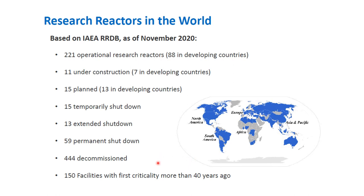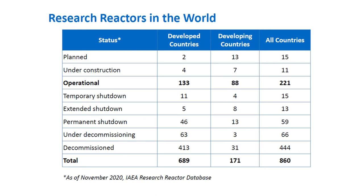Many research reactors are in decommission — up to 444 — because when a research reactor has already fulfilled or finished its research program, it can be directly decommissioned. Research reactors are also more easily decommissioned compared to power reactors. In total, there are 133 operational reactors in developed countries and 88 in developing countries, while 413 are decommissioned in developed countries and 31 in developing countries.